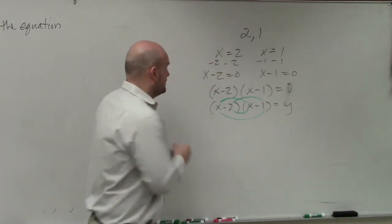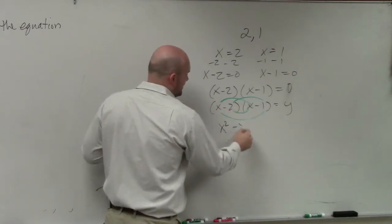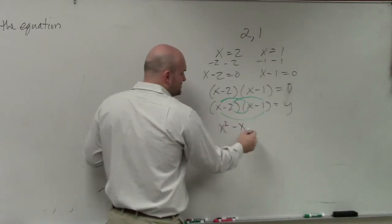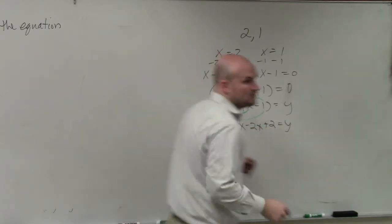So now x times x is x squared. x times negative 1 is negative x. Negative 2 times x is negative 2x. And negative 2 times negative 1 is positive 2 equals y.